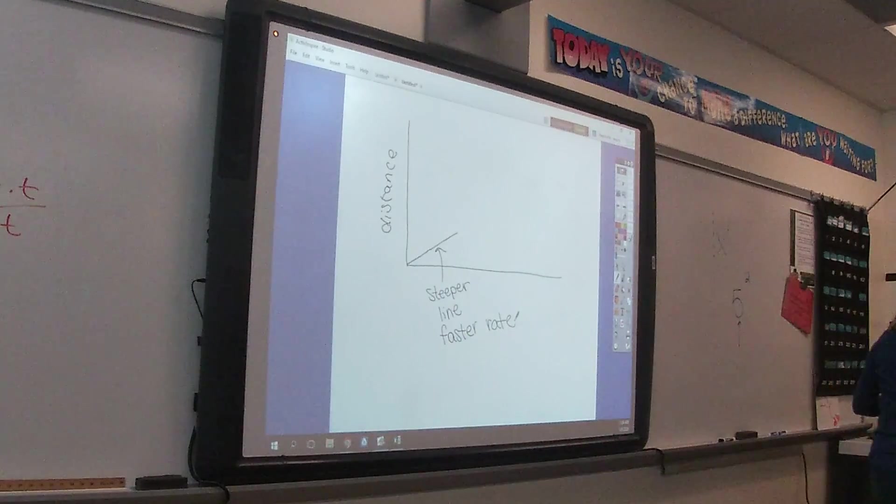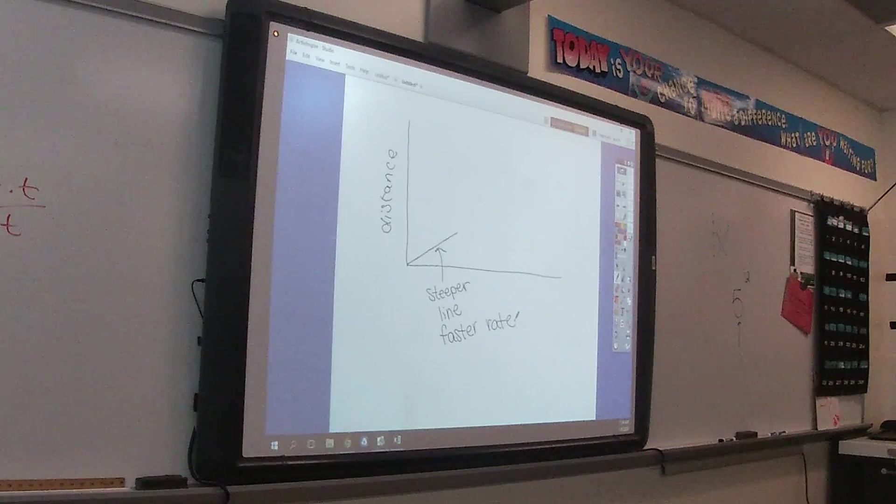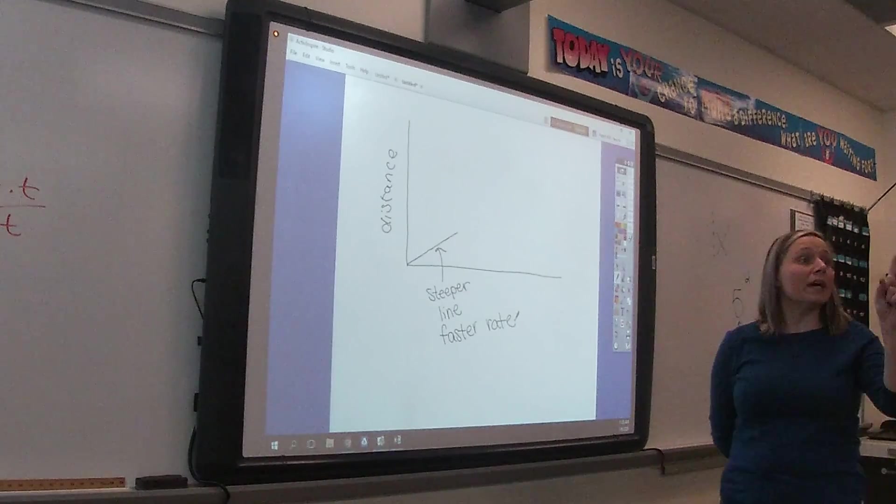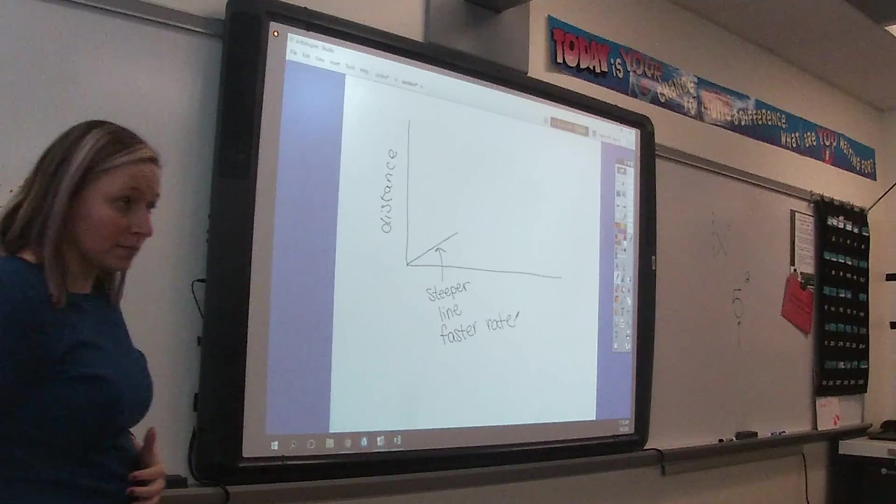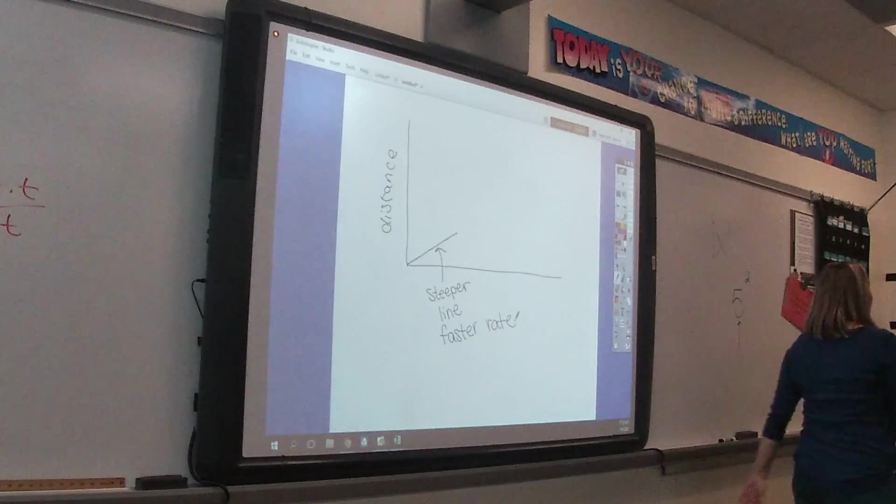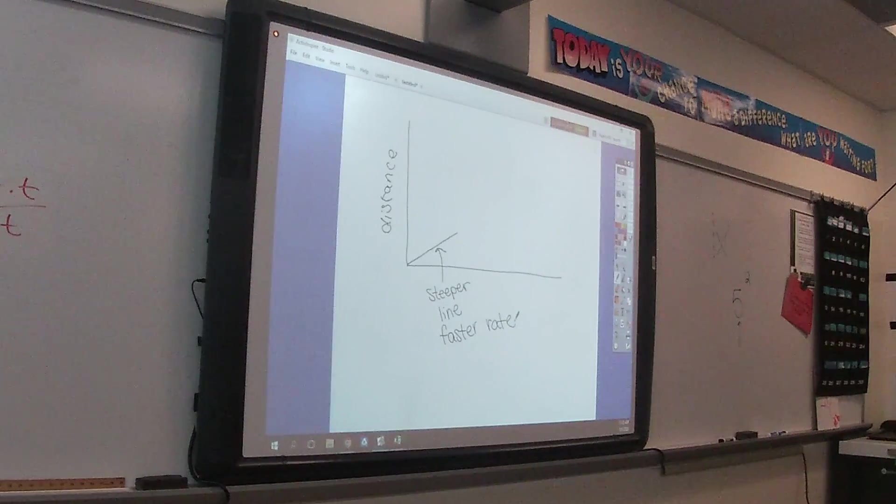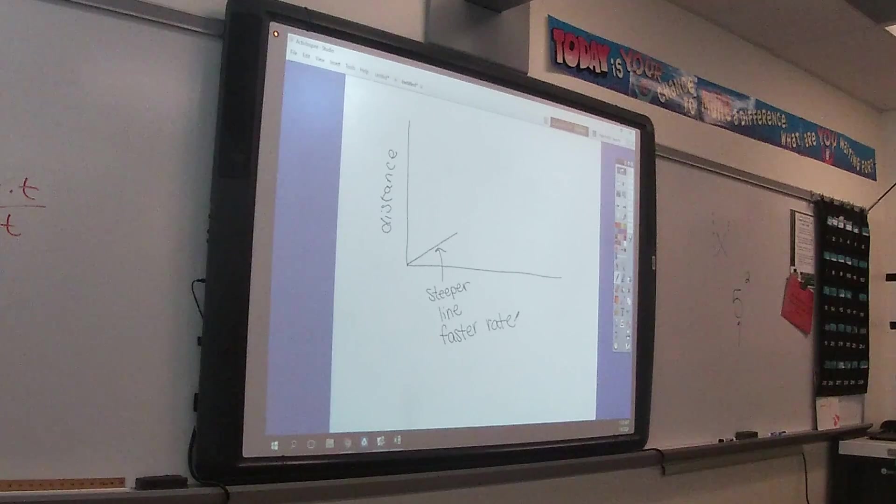So the steeper the line, the faster the rate. If the line is really shallow, I'm walking away from the door like this. Still at a constant speed, my speed's not changing, I'm just doing it slowly. If the line is steep, steeper, I'm quickly walking away from the door but still at a constant speed.